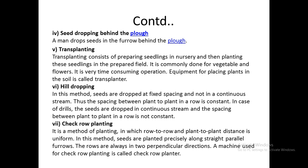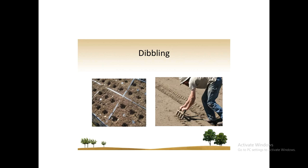Transplanting is the process of uprooting seedlings from the nursery and planting them in the main field; there are many implements available for this. In hill dropping, seeds are dropped at fixed spacing and not in a continuous stream — the spacing between plant to plant in a row is constant. In check row planting, both row-to-row and the spacing between two plants are uniform, so in both the x direction and y direction in the field the spacing is maintained.